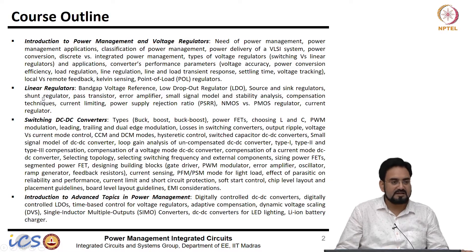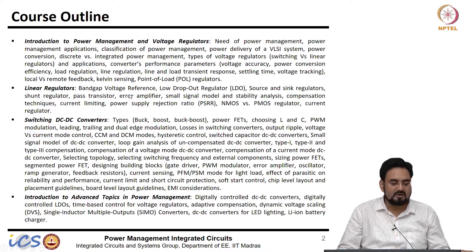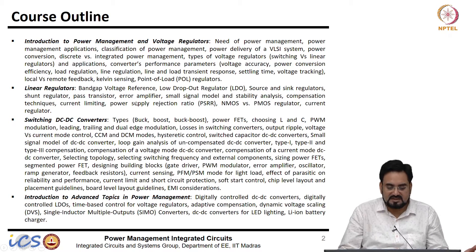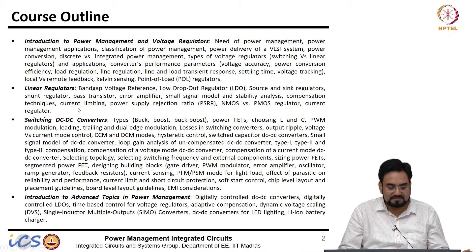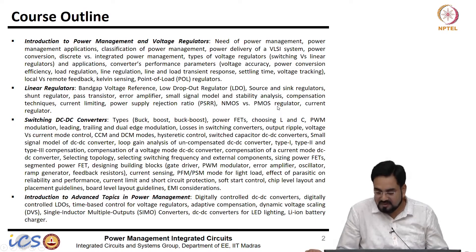We will cover how to choose between local or remote feedback, Kelvin sensing which is mainly used for accuracy reasons, and point-of-load regulators. In the second part we will move to linear regulators, covering band gap voltage reference, low dropout regulators, source and sync regulators, shunt regulator, pass transistors, error amplifier, small signal model and stability analysis, different types of compensation, current limiting, PSRR or power supply rejection ratio, and NMOS versus PMOS performance and area comparison.